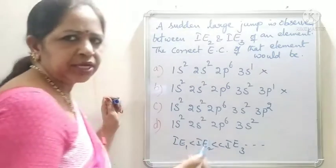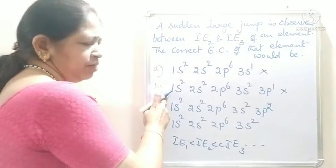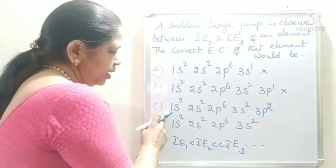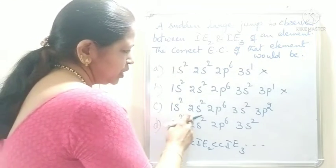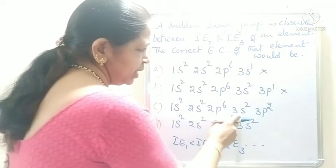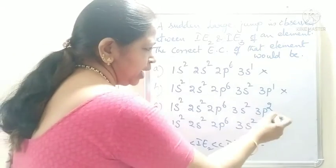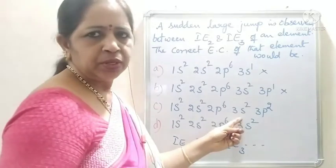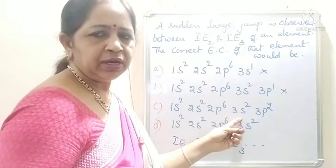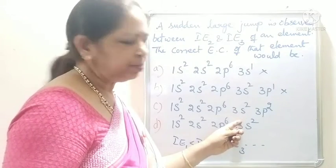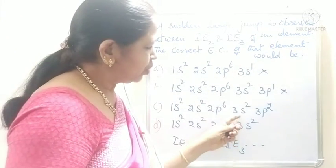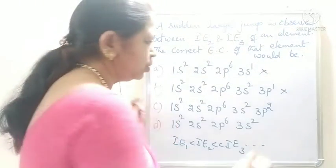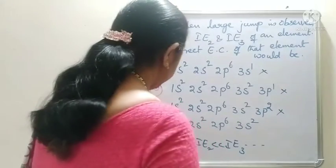Three electrons can be removed from option B's configuration. In option C — 1s², 2s², 2p⁶, 3s², 3p² — there are four electrons in the valence shell. So we would observe a jump from fourth to fifth in option C. So this is also not correct.